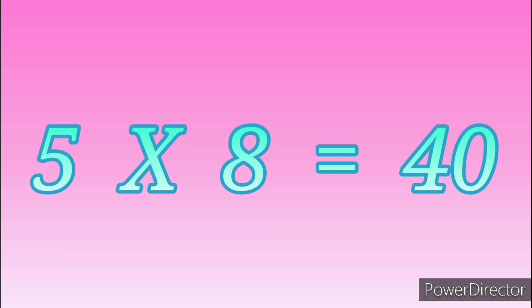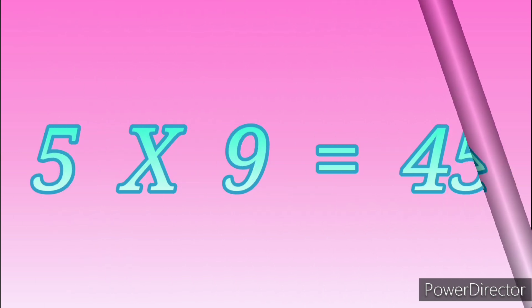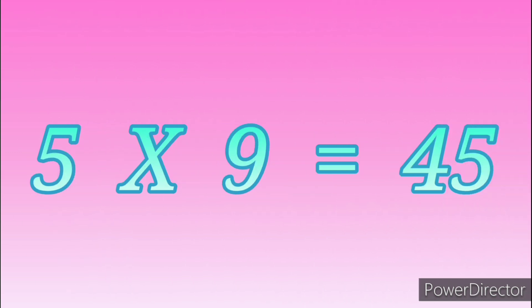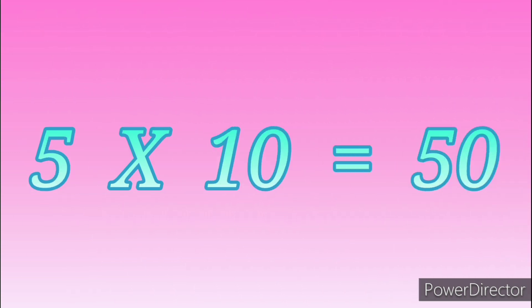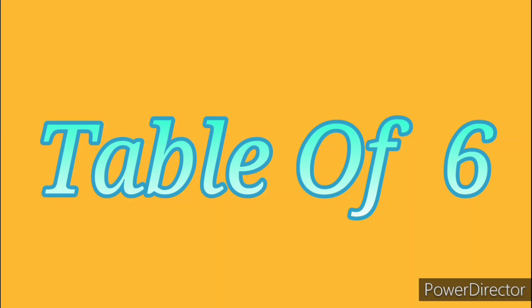5 nines are 45, 5 tens are 50. Table of Six.